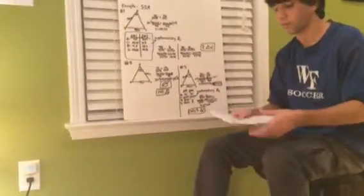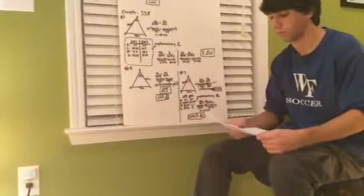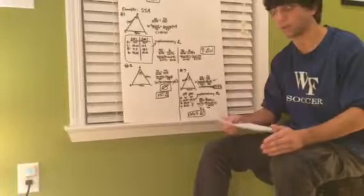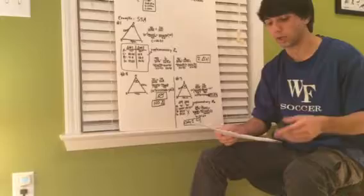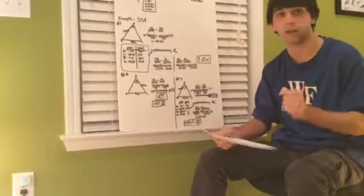To sum everything up, we've learned how to solve the sides and angles of angle-angle-sides, angle-side-angles, and side-side-angles. We've learned the formula and its uses. Next time, we'll learn how to use the law of cosines.